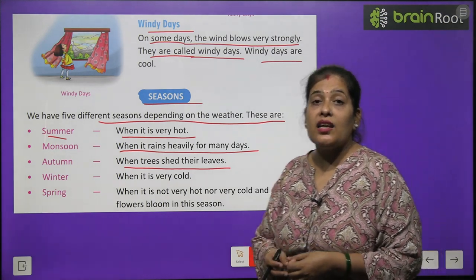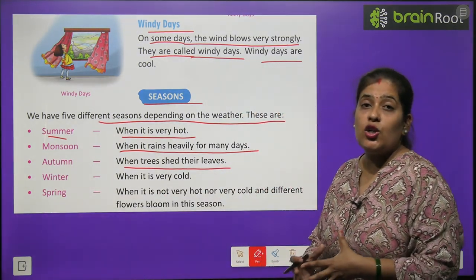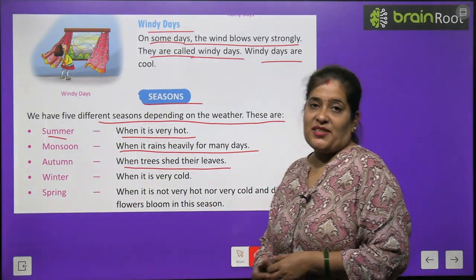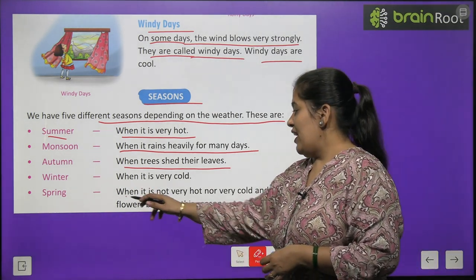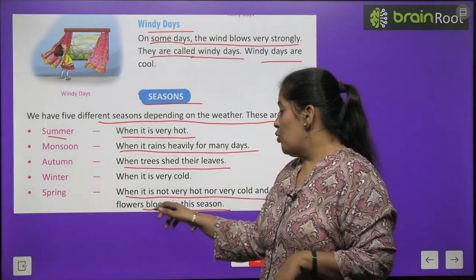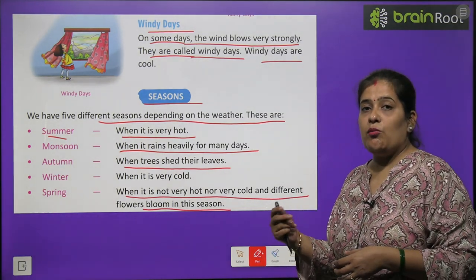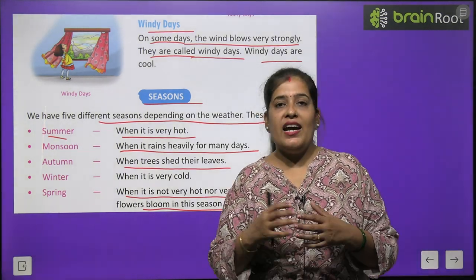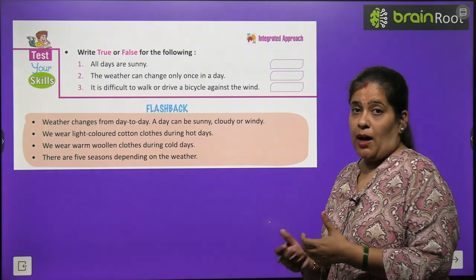Autumn season — pedon par patte nahi hote, vo Autumn season hota hai. Winter season — sard dinon ka, jab din bahut thande hote hain. Spring — kaun sa season hota hai jab naye naye phool khilte hain? When it is not very hot nor very cold and different flowers bloom — jab din na thande hon na jyada garam hon, vo kehlata hai Spring season. Spring season mein naye naye phool khilte hain.